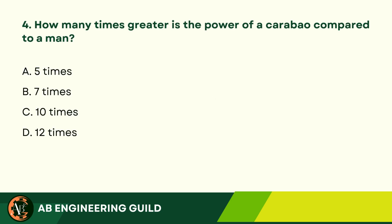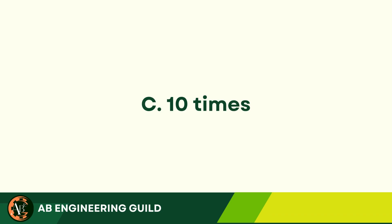Question 4: How many times greater is the power of a car compared to a man? A. 5 times. B. 7 times. C. 10 times. D. 12 times. Answer: C. 10 times.